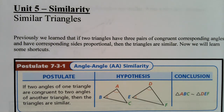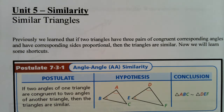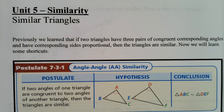This is the next lesson in Unit 5. The lesson is called Similar Triangles. If you think back to Unit 4, Congruence, the very first lesson showed how to prove two triangles were congruent, and then we learned the shortcuts. We're going to do something similar today for similarity. Previously, we learned that if two triangles have three pairs of congruent corresponding angles and have their corresponding sides proportional, then the triangles are similar.